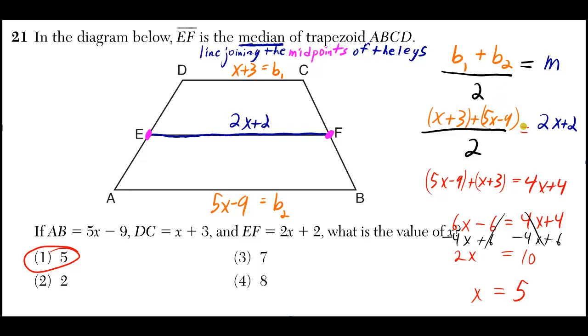And then the next step I take is I multiply both sides by 2. It cancels out 2 on the left side. And then 2 times 2X plus 2 gives me 4X plus 4.